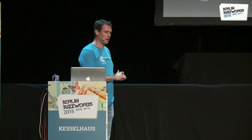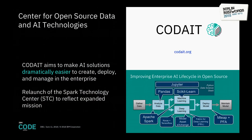A little bit about CODAIT — it was formerly known as the Spark Technology Center, formed by IBM to focus on Apache Spark and the surrounding ecosystem. Over time, it expanded to focus on AI, deep learning, machine learning, and data science in general. Now rebranded as CODAIT, we focus on enabling the end-to-end AI lifecycle in the enterprise: Spark, the Python data science stack, deep learning frameworks, and projects like the Model Asset Exchange and the Fabric for Deep Learning.